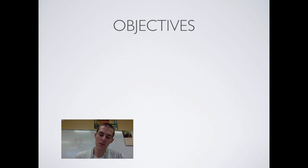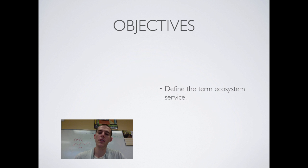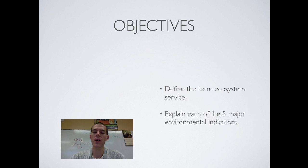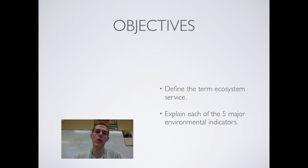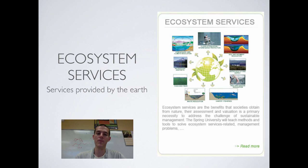By the end of this video, two things I need you to be able to do. First is to define the term ecosystem service, and the second is to explain each of the five major environmental indicators. Today we're going to look at how environmental scientists gauge whether or not an ecosystem is healthy. But before we talk about that, we need to talk about the idea of an ecosystem service.